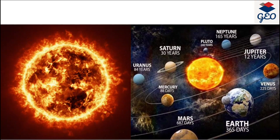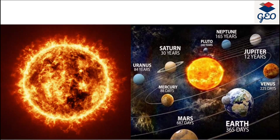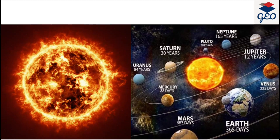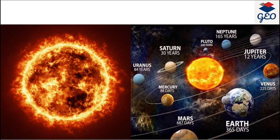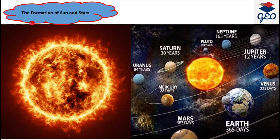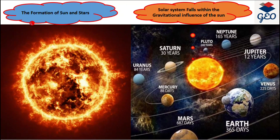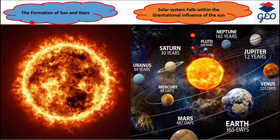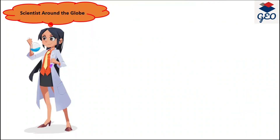After talking about the Big Bang Theory in my earlier video about the origin of the universe, in this video we narrow down our understanding about the formation of the sun and stars. Our solar system falls within the gravitational influence of our sun. Many scientists around the globe have proposed their hypotheses about the origin of the sun and moon.